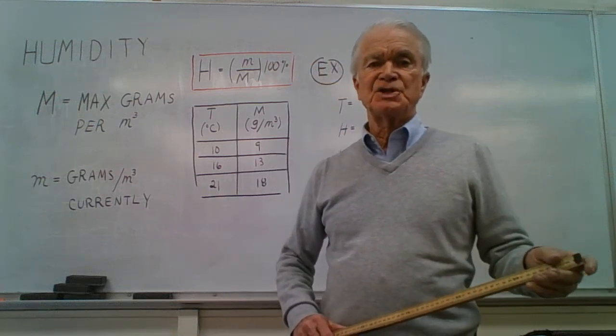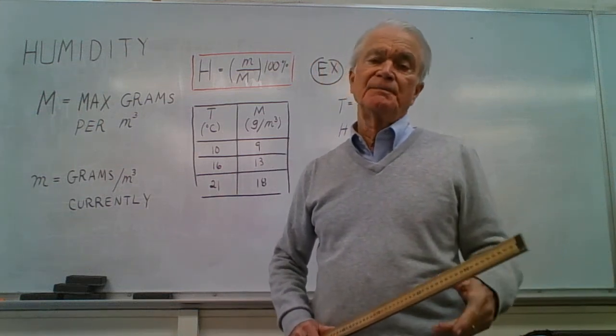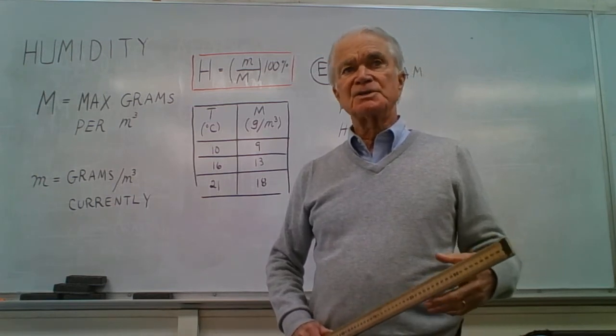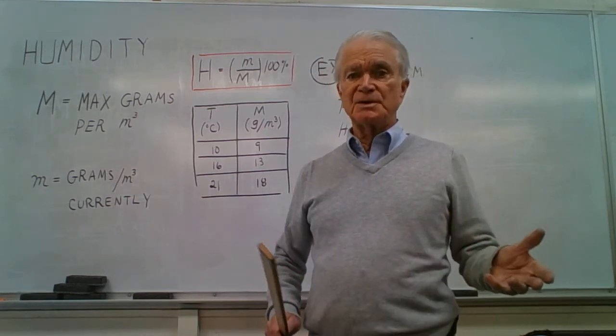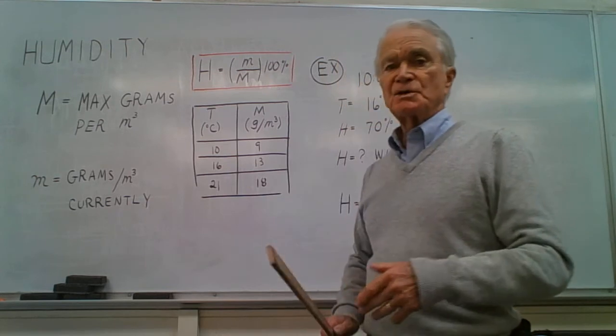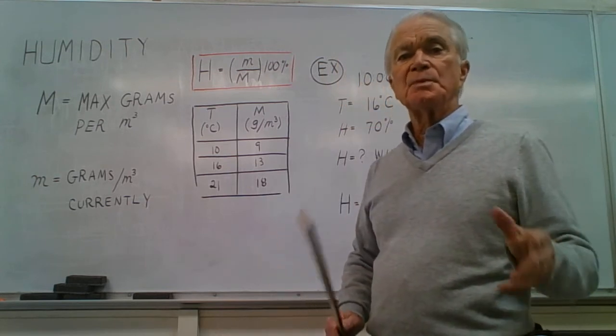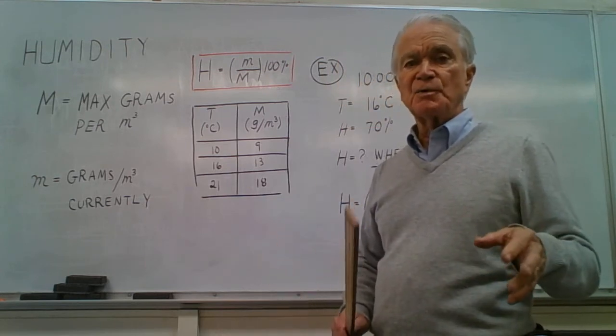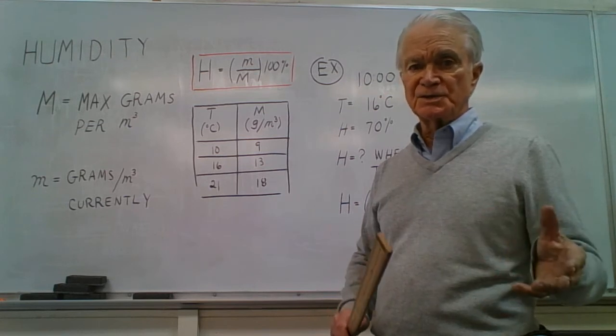The final topic in part J deals with humidity. Humidity relates to the amount of water vapor that's in the air. There's a certain maximum amount of water vapor per cubic meter that can exist before the water vapor starts to condense.